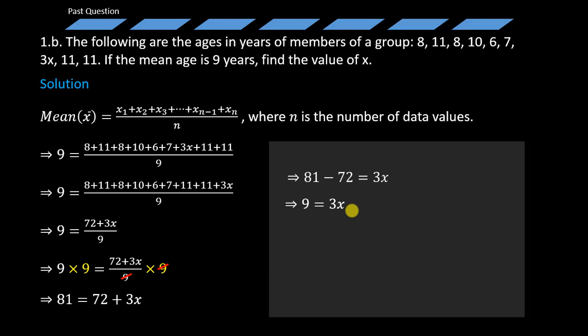Now how do we find X? We divide 3 across both sides of the equation, and that lands us with the answer: X is simply equal to 3. Thus we can say that the value for X is 3.